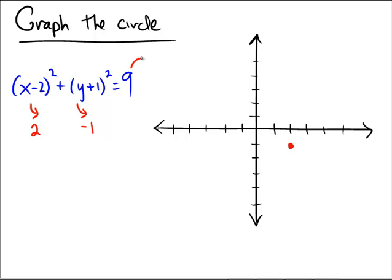The radius is found from over here, because the number on the right is going to be the square of the radius. So, what number squared equals 9, or what's the square root of 9? That would be 3. So, the radius is going to be 3.